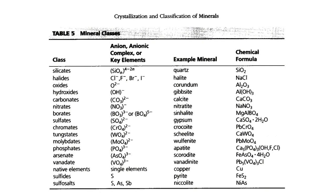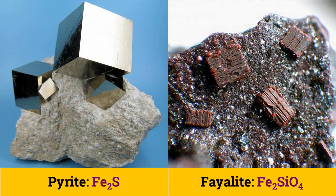Let's explore the classification of minerals based on the anion or anionic complexes. This classification was started by Zoltai and Stott in 1984 and is now prevalent everywhere. What's neat about this classification is that we can determine classes from the chemical formula only. Also, within each class, the structure and bonding is nearly the same, and it is due to this reason only we have not divided minerals based on the cations.